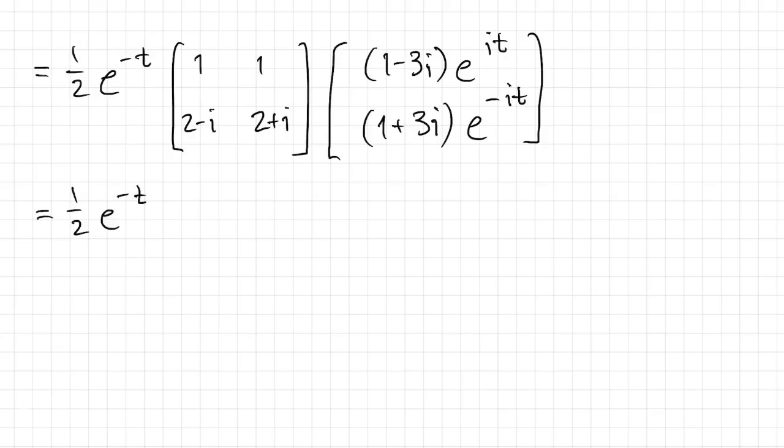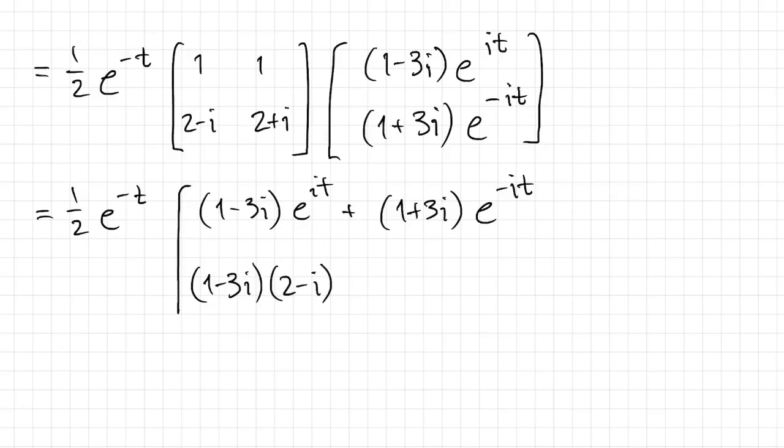Now we're just going to have to bear down and do this multiplication. So I get that 1 minus 3i times e to the it plus the second row 1 plus 3i times e to the minus it. And then second row first column, or second row times the column, I should say. It's just 2 minus i times 1 minus 3i times e to the it plus the other term.